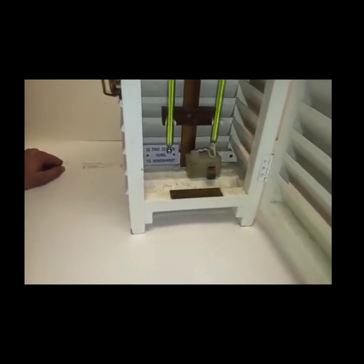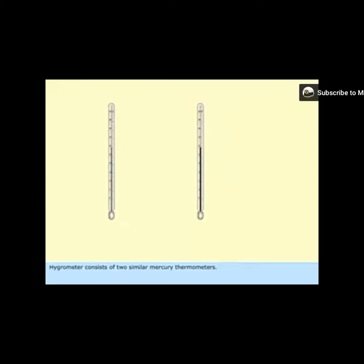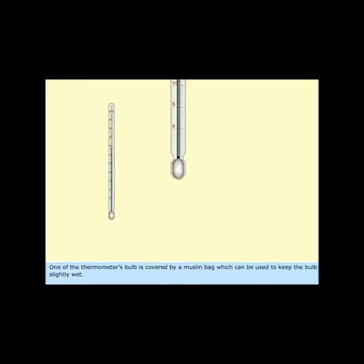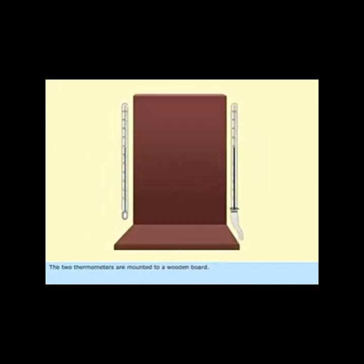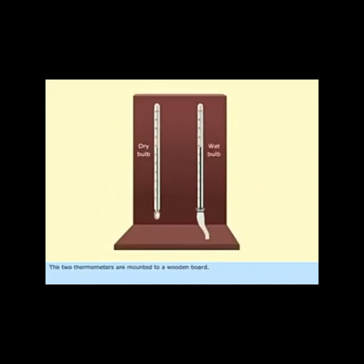A hygrometer is the instrument used to measure humidity. A hygrometer has two thermometers: the wet bulb thermometer and the dry bulb thermometer. The wet bulb thermometer has a bulb covered with a water-soaked cloth, also known as a muslin sock, over which air is passed. The air is meant to evaporate moisture from the wet bulb but not have a cooling effect on the dry bulb.